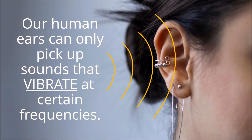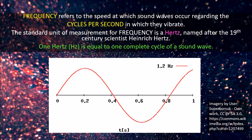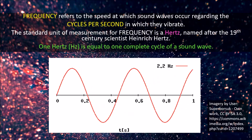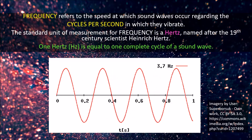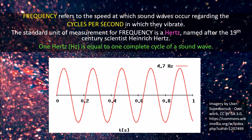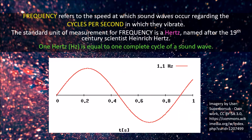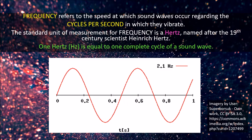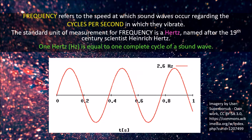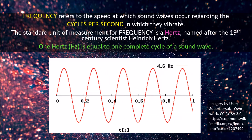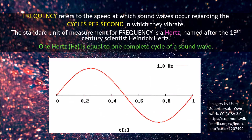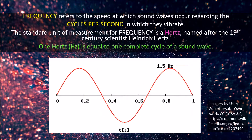Our human ears can only pick up sounds that vibrate at certain frequencies. Frequency refers to the speed at which sound waves occur regarding the cycles per second in which they vibrate. The standard unit of measurement for frequency is a hertz, named after the 19th century scientist Heinrich Hertz. One hertz is equal to one complete cycle of a sound wave.